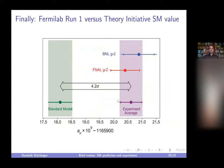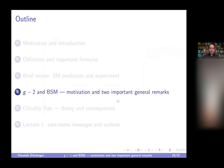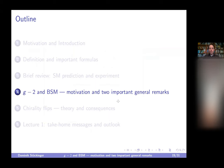We have the experimental measurement, we have the Standard Model prediction, and the deviation is 4.2 sigma. Let us now come to physics beyond the Standard Model.